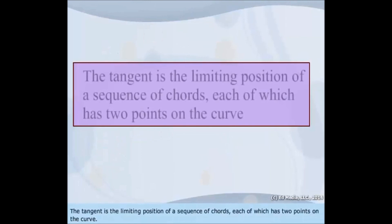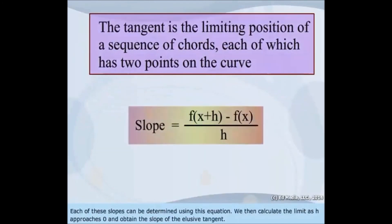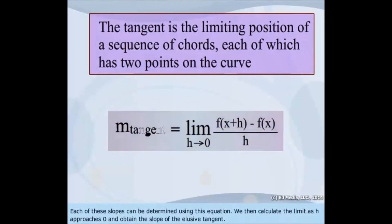The tangent is a limiting position of a sequence of chords, each of which has two points on the curve. Each of these slopes can be determined using this equation. We then calculate the limit as h approaches zero and obtain the slope of the elusive tangent.